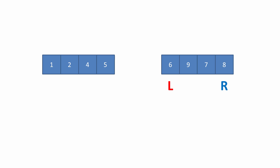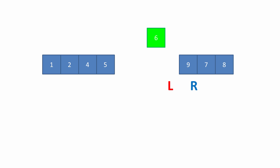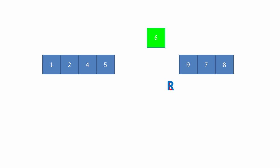So a couple of pointers, choose a pivot value, and ask: is eight less than six? The answer is no, so we'll simply advance the right pointer. Is nine less than six? No again, so we simply advance the right pointer. And where those pointers collide, we know we can put our value six.